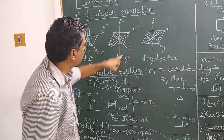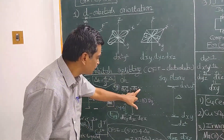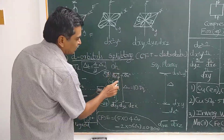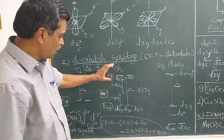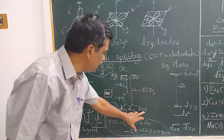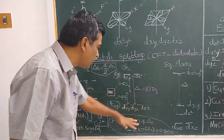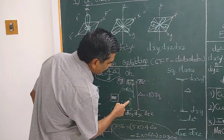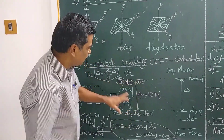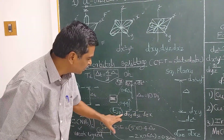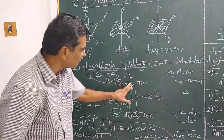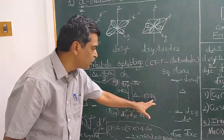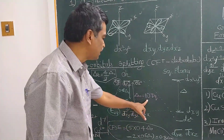The dxy, dyz, and dxz orbitals (the t2g set) are lowered in energy by 0.4Δ₀ with respect to the barycentre. The t2g set is triply degenerate and the eg set is doubly degenerate. The energy gap between t2g and eg is given by Δ₀ = 10Dq, where Dq is the unit and 10Dq is the crystal field stabilization energy for an octahedral complex.